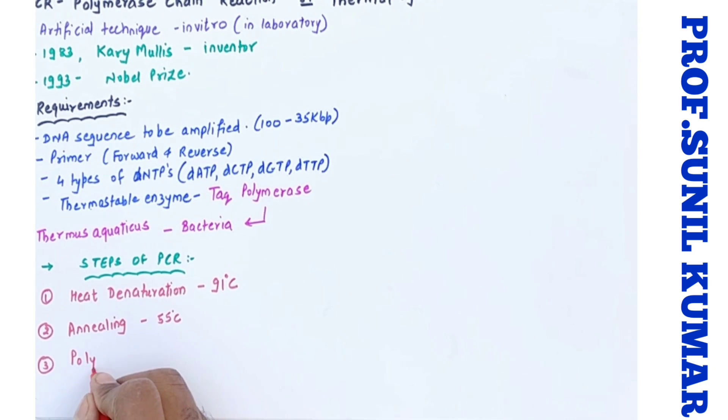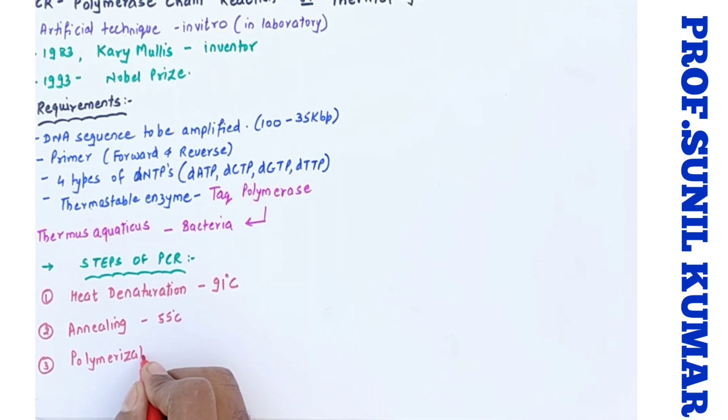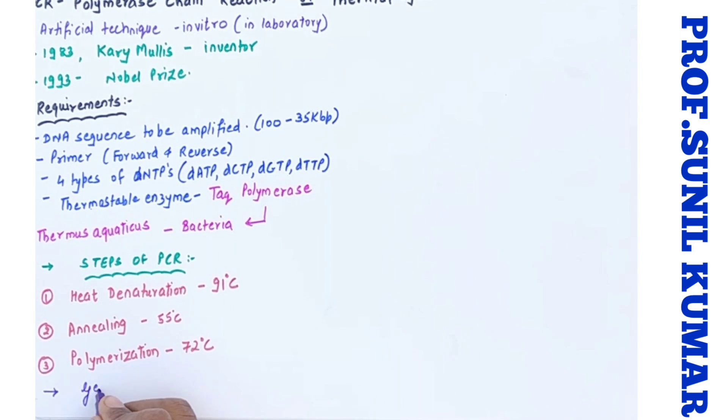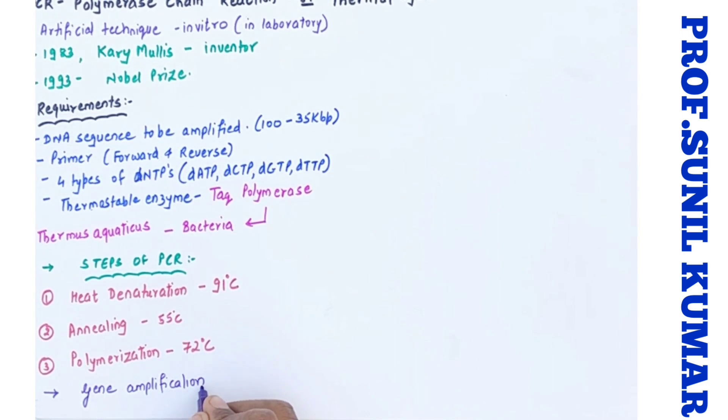Second step is annealing which is at 55 degrees Celsius, and P stands for polymerization which takes place at 72 degrees Celsius. Remember the steps and the temperature, it is HAP.